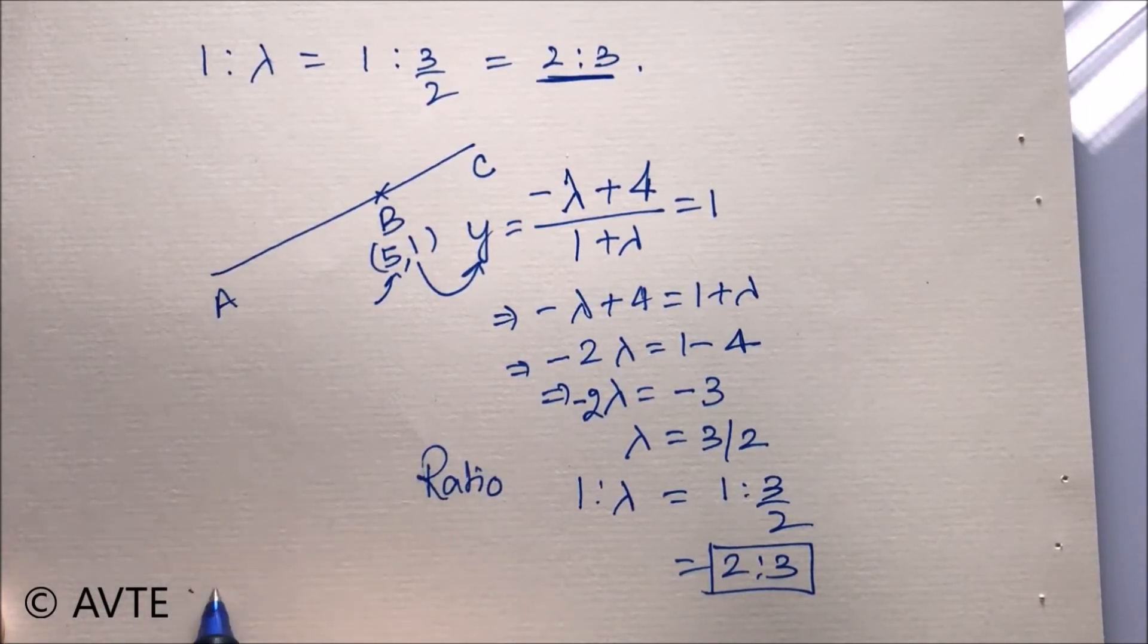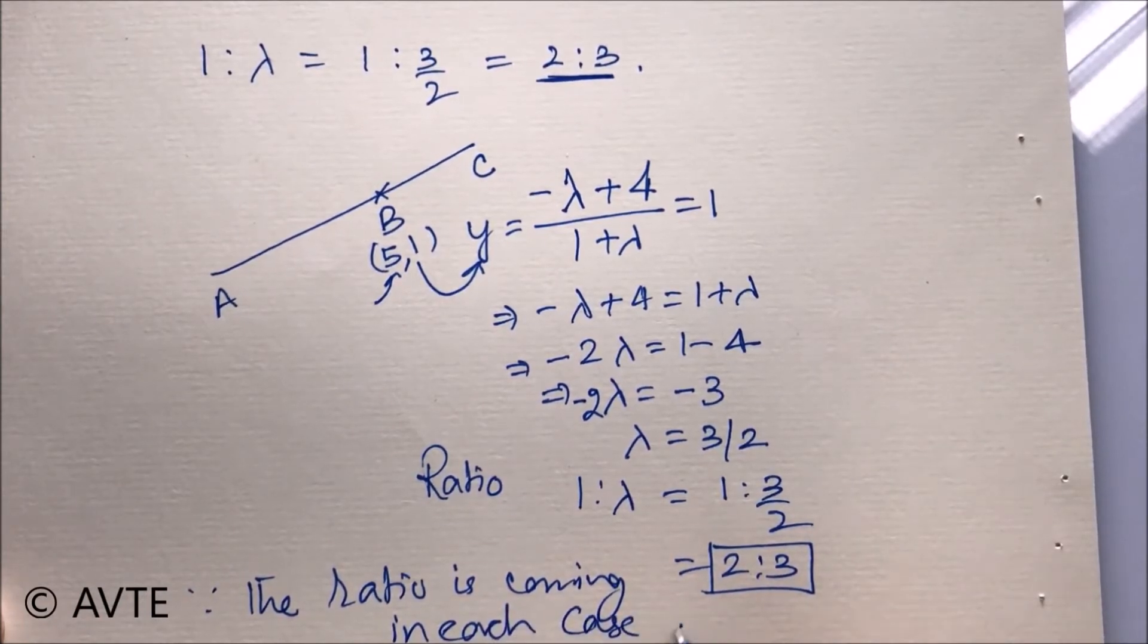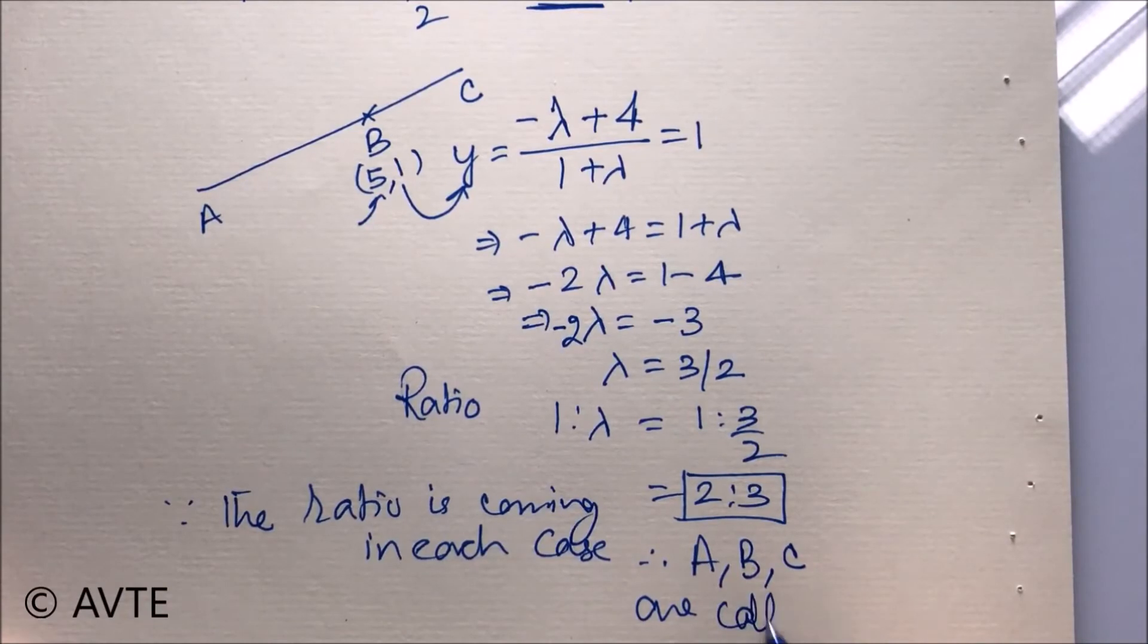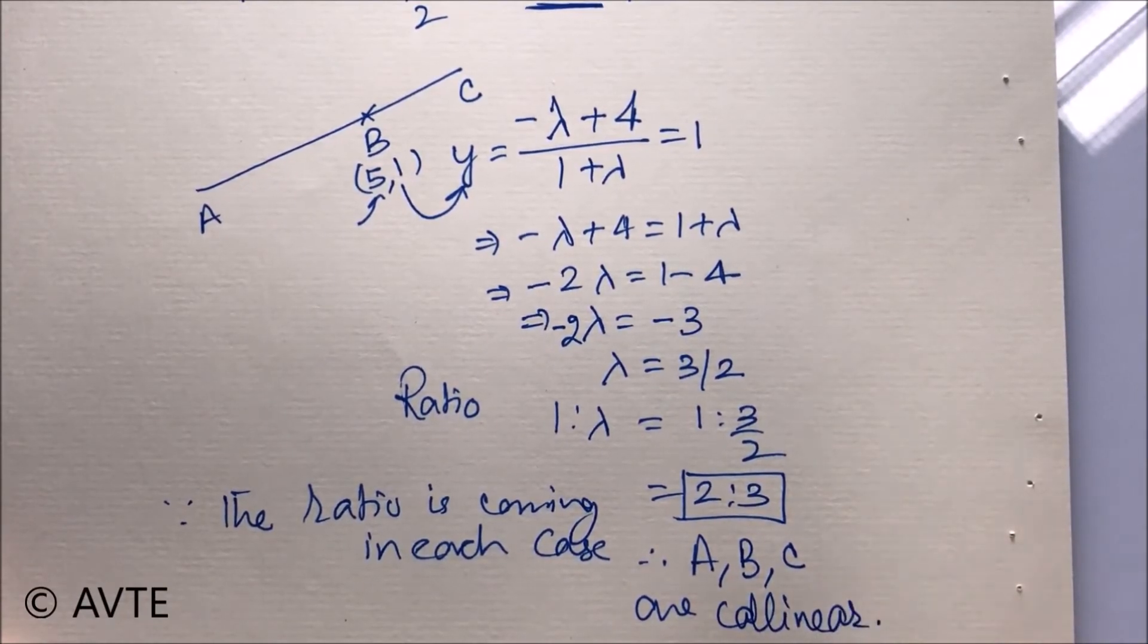So you will write, because the ratio is coming same in each case, therefore, A, B, and C are collinear. There are various other methods. One could find the ratio from x component and can get the value of y component. And if the y component is coming 1, that is also a possibility that the points are collinear.